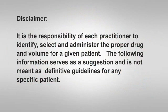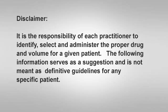It is the sole responsibility of each practitioner to identify, select, and administer the proper drug and volume for a given patient. The following information serves as a suggestion and is not meant as definitive guidelines for any specific patient. The suggested drug and volume to perform the inferior alveolar nerve block injection is 2% xylocaine HCL with one part per 100,000 epinephrine, at a drug volume of 0.9 milliliters to 1.4 milliliters, equivalent to three-quarters to one full cartridge.